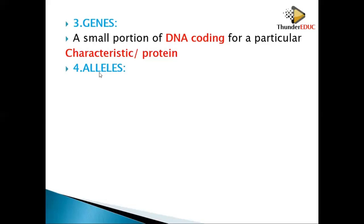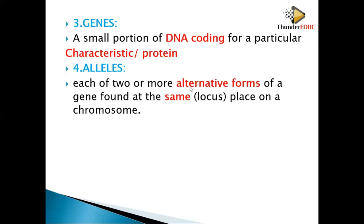An allele is an alternative form of a gene — you can be tall or short, so the alternative form is called an allele. Alleles are alternative forms of a gene found at the same locus. A locus is the location, place, or position of a gene on the chromosome.